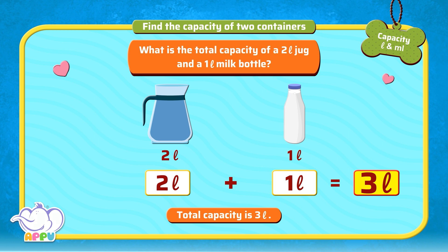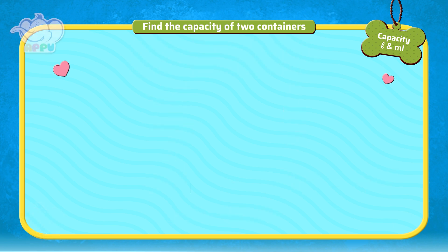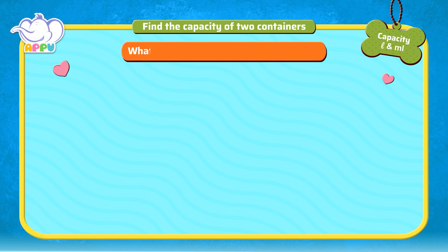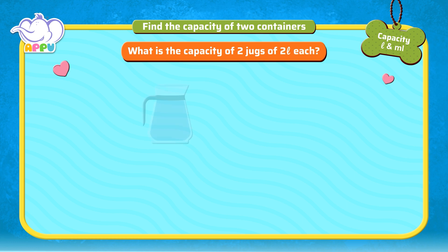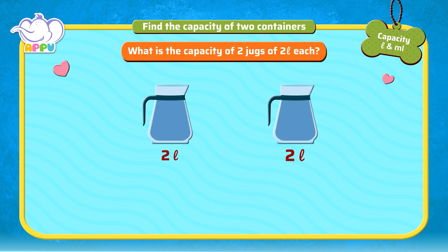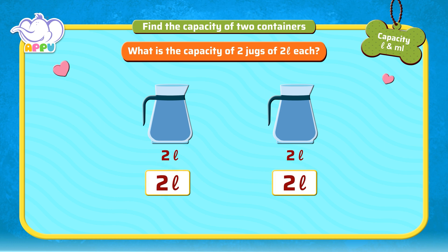That's better! What is the capacity of 2 jugs of 2 litres each? To find the total capacity of 2 jugs of 2 litres each, we add each of their capacities. 2 litres plus 2 litres is equal to 4 litres.